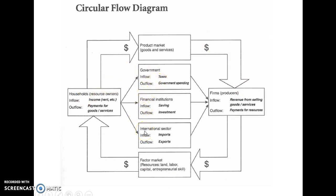What we'll learn in the GDP screencast is that one way to calculate GDP is to look at consumption, investment, government spending, and net exports — these are the different components. Consumption is on the outside. The government gets money through taxes, so there's an inflow of money going into the government, and then they use that money to spend on different services and goods — that's the outflow.